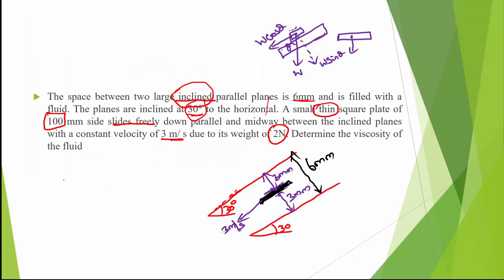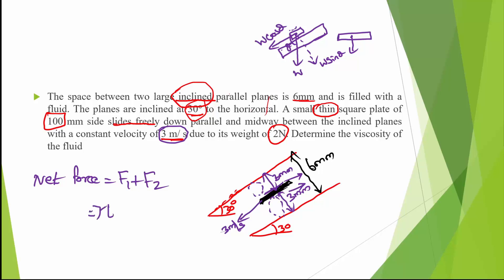The net resisting force equals F1 plus F2, acting on both sides. Since the plate moves with constant velocity, the net force is zero — acceleration is zero — so the applied force equals the resistive force. To find F1 and F2, we use tau1 and tau2, and the total force F equals (tau1 + tau2) × area.